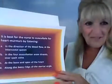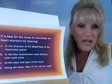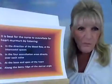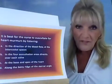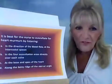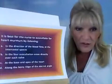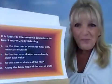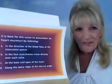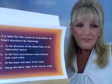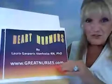The question stated: it is best for the nurse to auscultate for heart murmurs by listening — A, in the direction of the blood flow at the intercostal space; B, in the four auscultation areas directly over each valve; C, at the base and apex of the heart; and D, along the bony ridge of the sternal angle. Most nurses picked B as the answer, but that's wrong, because you don't listen to the murmur over the heart valve that produced it. The answer is A — you listen in the direction of the blood flow at the intercostal spaces.